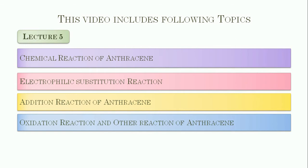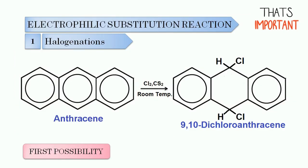We know that anthracene is aromatic in nature and its chemical properties very much resemble those of naphthalene and benzene. However, anthracene is more reactive than naphthalene and benzene towards electrophilic substitution reactions and addition reactions, particularly at position number 9 and 10. So first of all, we can start with electrophilic substitution reactions, and in this section we will first discuss halogenation.